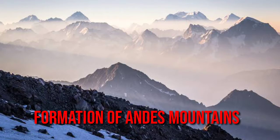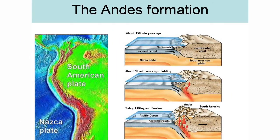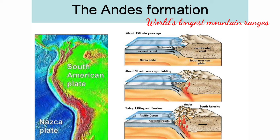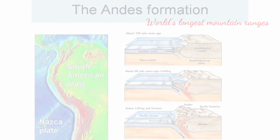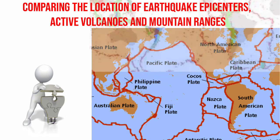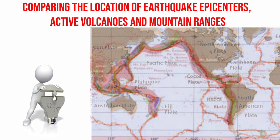The Andes were formed when the Nazca Oceanic Plate moved towards and subducted beneath the west part of the South American Plate. The Andes Mountain range is also considered the world's longest mountain range. Comparing the location of earthquake epicenters, active volcanoes, and mountain ranges, these geologic features and processes are all products of moving lithospheric plates. When lithospheric plates interact, earthquakes, volcanoes, and mountain belts are produced.